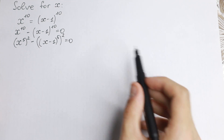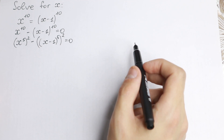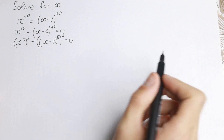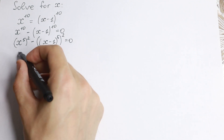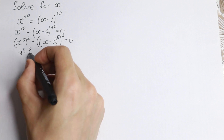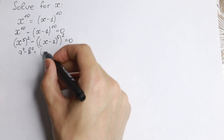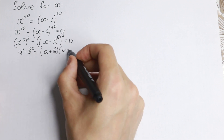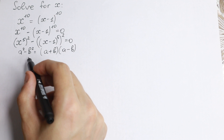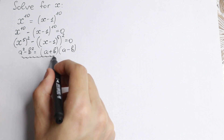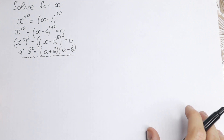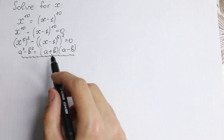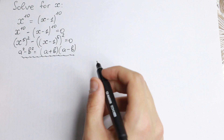So we express this as a difference of squares. If you know a little bit about math, you know the identity formula a squared minus b squared equals a plus b times a minus b. We need this formula right here. In our case, a equals x to the fifth and b equals x minus 1 to the fifth power.